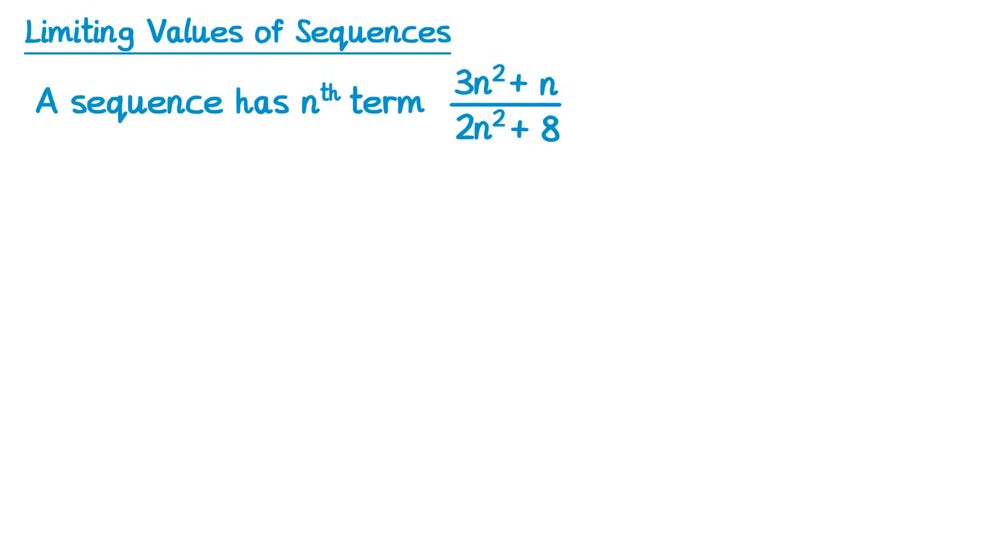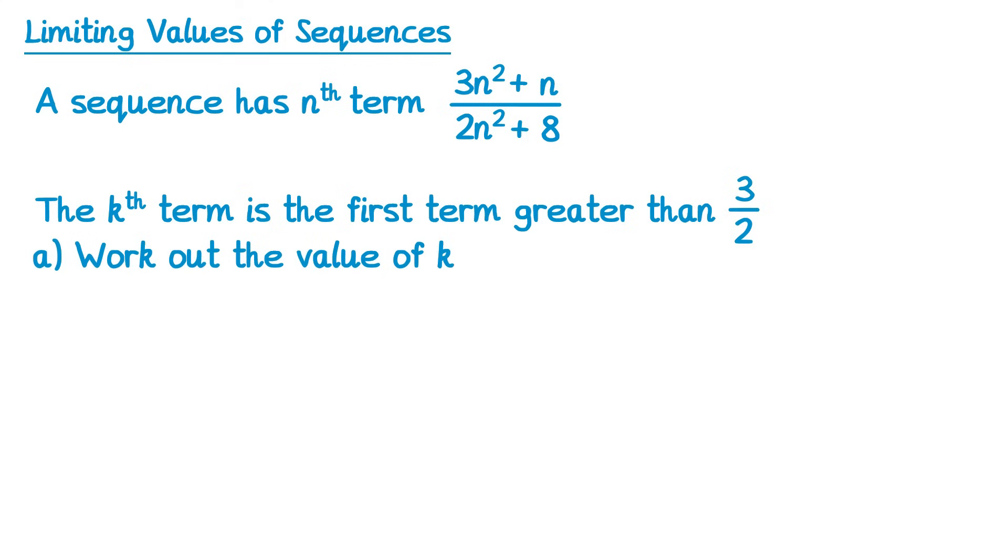Now for this one, we have another sequence with an nth term, and we're told the kth term is the first term greater than 3 over 2, so not equal to 3 over 2 this time, greater than. We need to find the value of k.